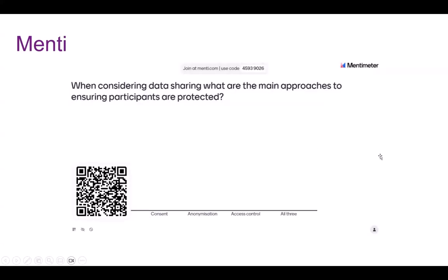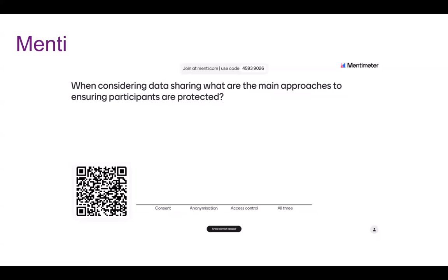When considering data sharing, what are the main approaches to ensuring participants are protected? Consent, anonymization, access control, or all three? The answer is all three. Please take away the fact that anonymization is one of many things you can do — it should be considered alongside consent and access control.